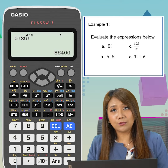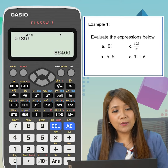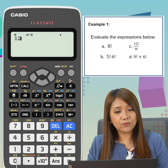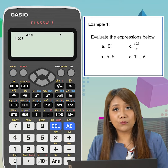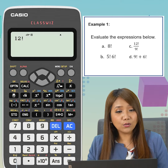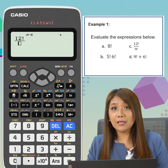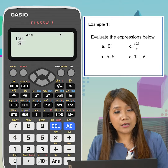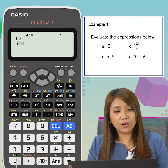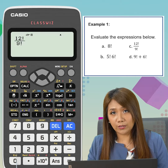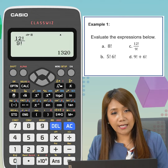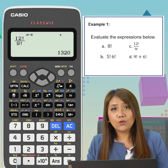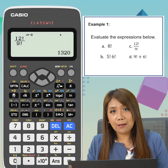For our next example, first we click on the numerator which is 12, shift x raised to negative 1 for factorial, followed by fraction. And for the denominator, let's key in 9 raised to shift x raised to negative 1 for factorial. We click on equal sign and the answer is 1,320.